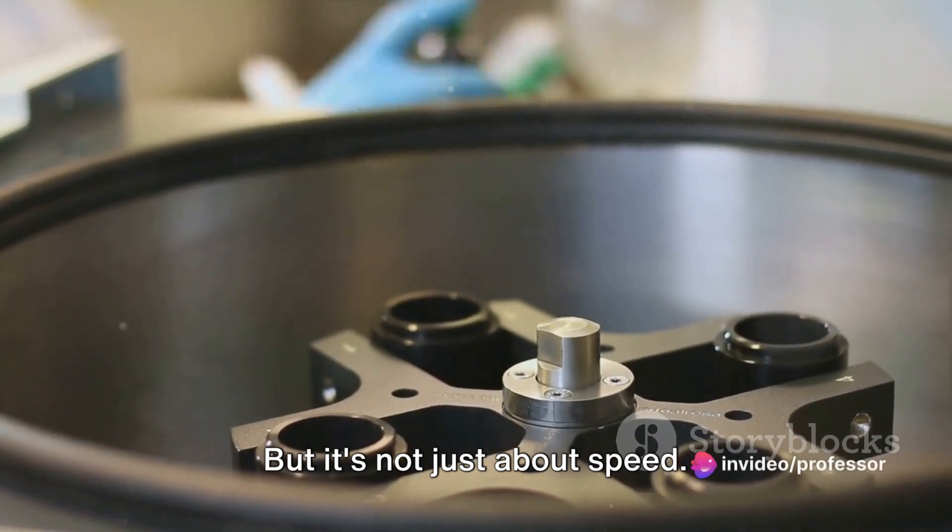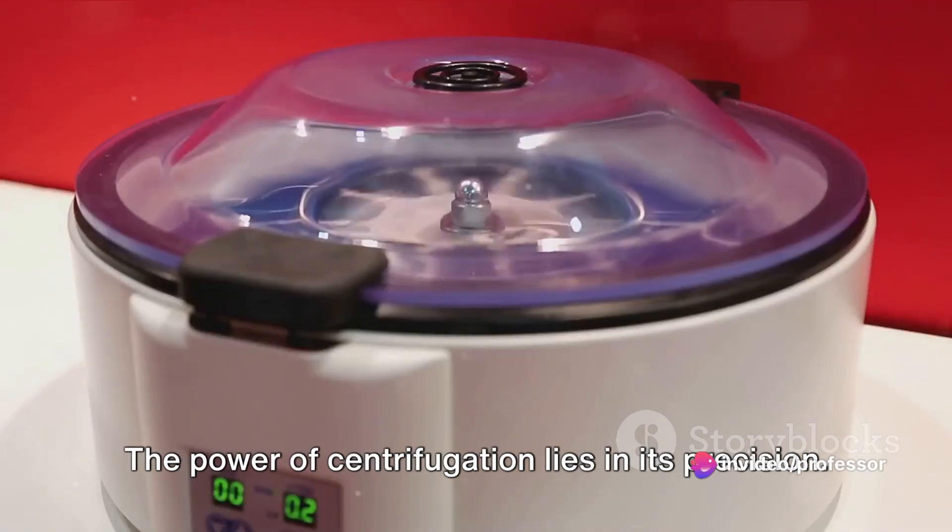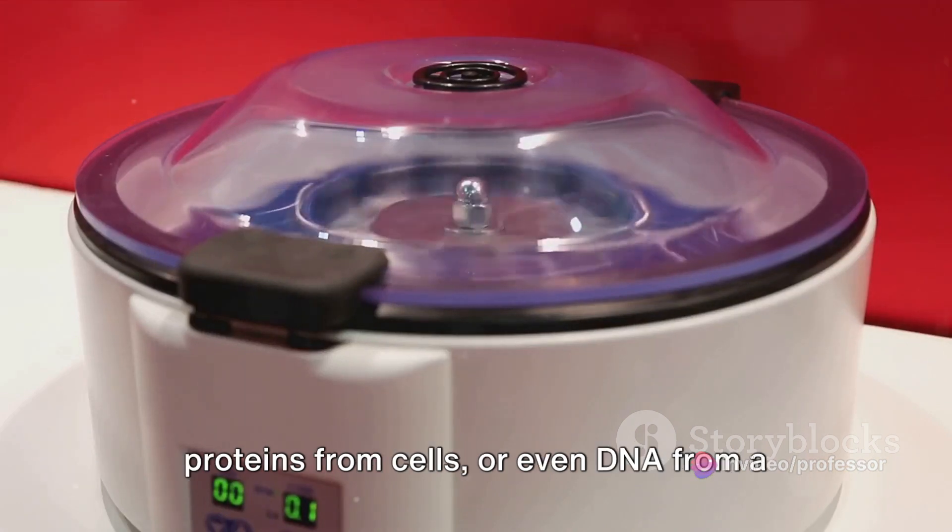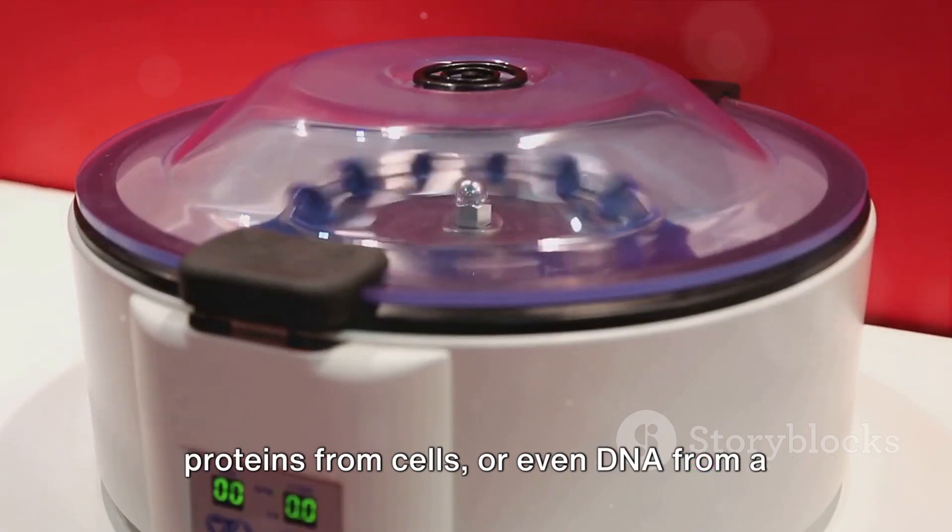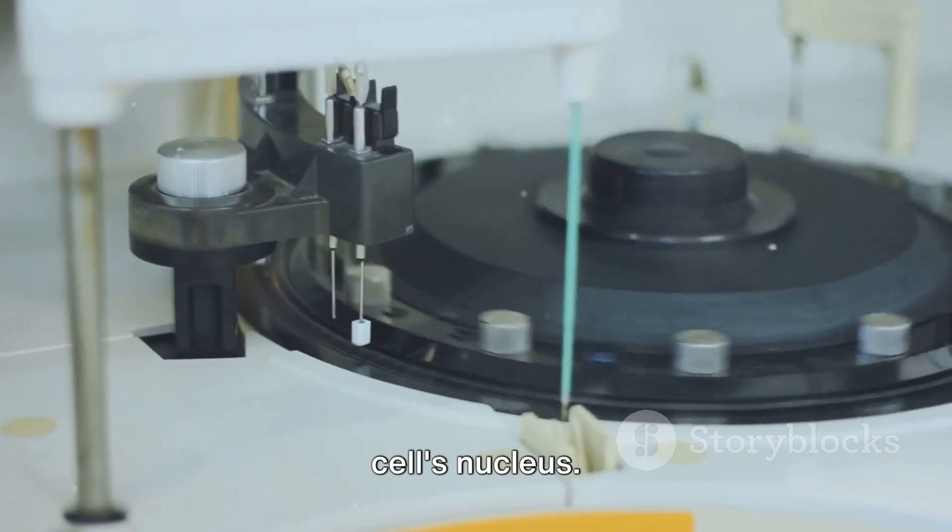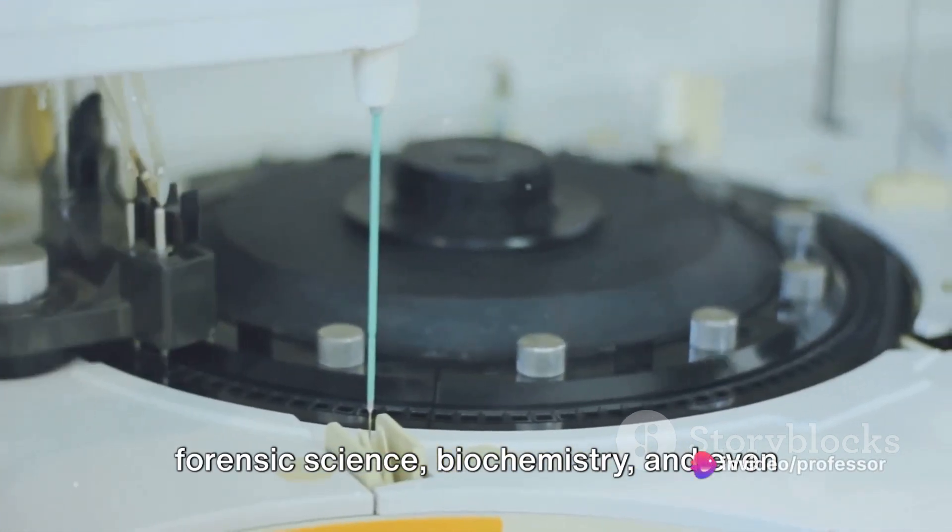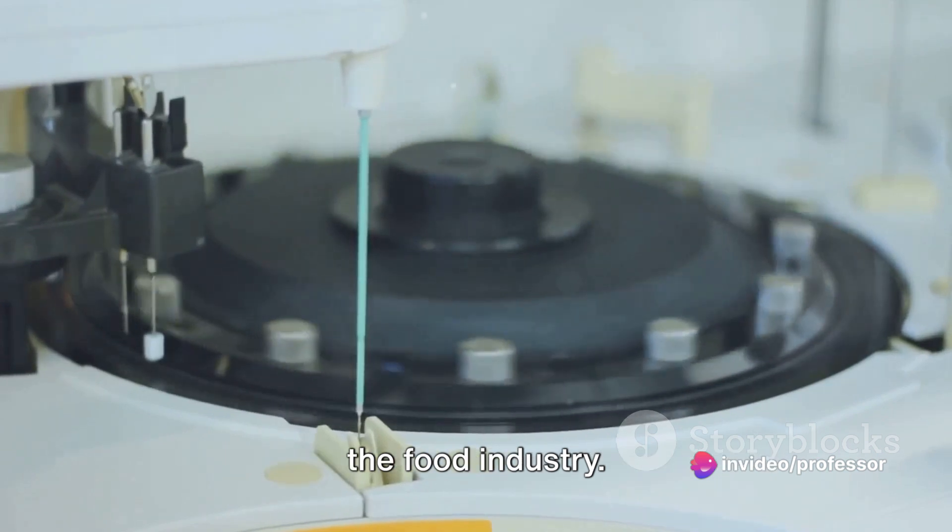But it's not just about speed. The power of centrifugation lies in its precision. It can separate cells from a liquid, proteins from cells, or even DNA from a cell's nucleus. It's a vital tool in medical research, forensic science, biochemistry, and even the food industry.